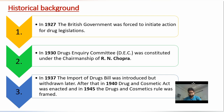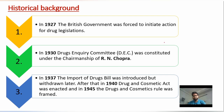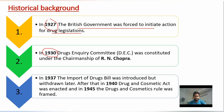Let us discuss the historical background. In 1927, the British government was first forced to initiate action for drug legislation. Before 1927, the British government did not take any kind of initiative to regulate drugs inside India. In 1930, the Drug Inquiry Committee (DIC) was formed, and the first chairman was R.N. Chopra.